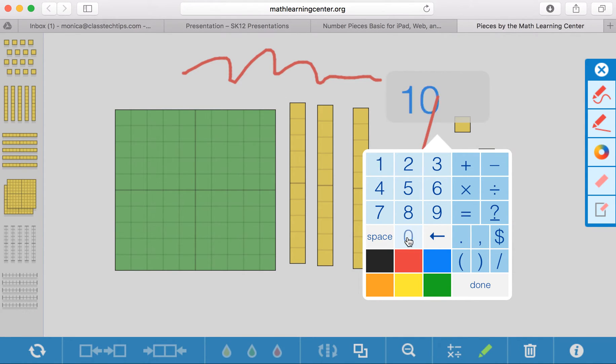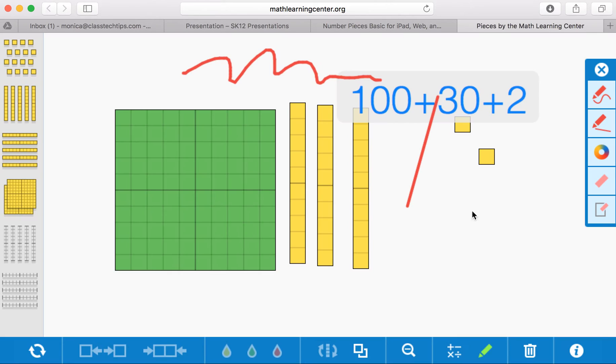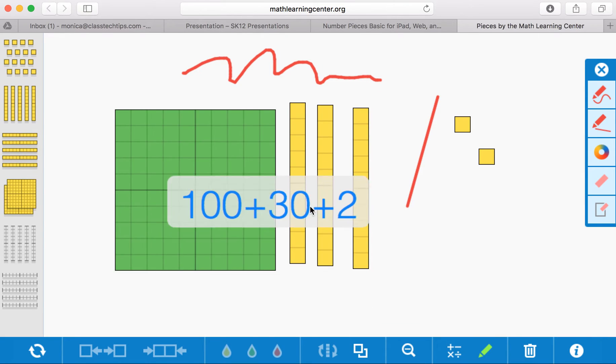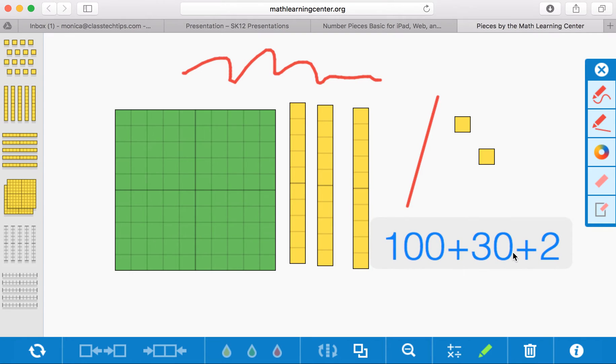So I might do 100 plus 30 plus 2 and take that equation and place it either on top or to the side using my base 10 blocks as well. So all of these are great if you want to model how to use base 10 blocks for place value online for your students.